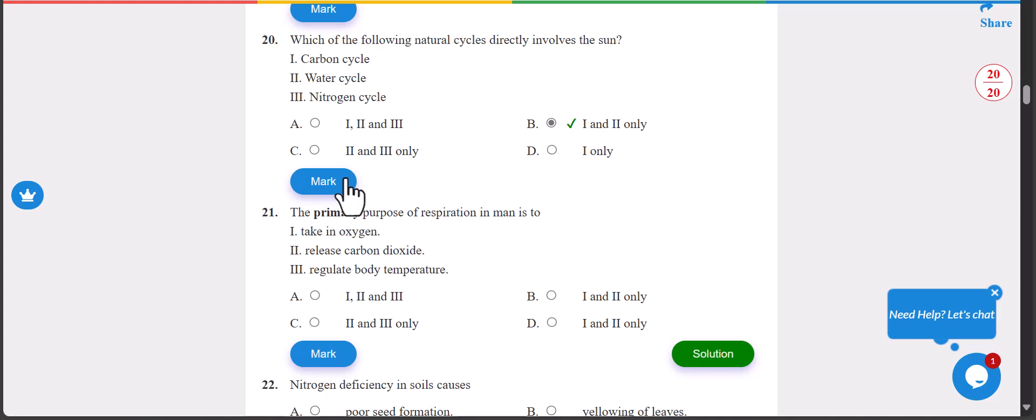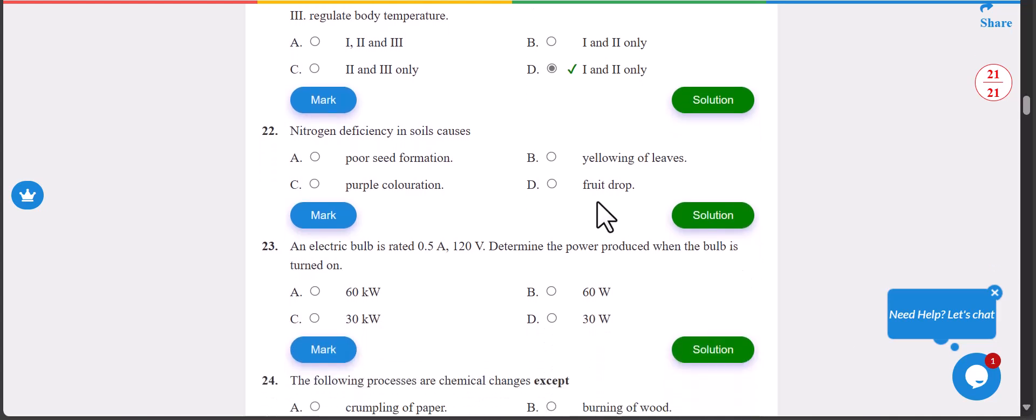Number 21: the primary purpose of respiration in humans is to do what? We have taking oxygen, release carbon dioxide, regulate body temperature. The answer is D, that is I and II only - we take in oxygen and regulate body temperature.